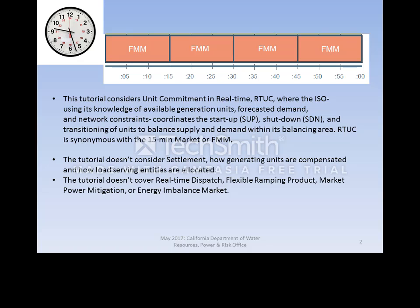The CAISO real-time market consists of multiple processes or applications which, in the words of the BPM, are multi-interval optimization functions minimizing the cost of dispatching imbalance energy and procuring additional ancillary services when applicable, subject to resource and network constraints. Think of imbalance energy as the difference between scheduled energy flows — for instance, the day-ahead market schedule — and the actual meter readings. The real-time applications use sub-hourly time intervals within their time horizon.